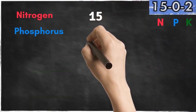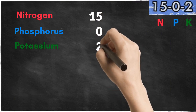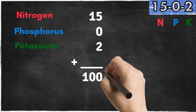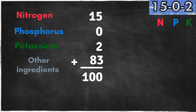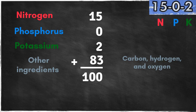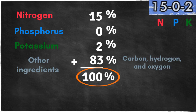Nitrogen, phosphorus, and potassium are not the only ingredients in the bag. The number 83 represents the amount of other ingredients, such as naturally occurring elements like carbon, hydrogen, and oxygen. These four components make up 100% of the bag of fertilizer product.